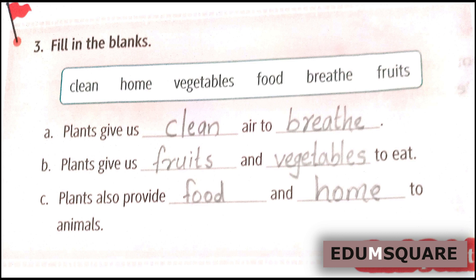Fill in the blanks. First: Plants give us dash air to dash. The answer is: clean air to breathe. Second: Plants give us dash and dash to eat. The answer is: fruits and vegetables. Third: Plants also provide dash and dash to animals. The answer is: food and home.